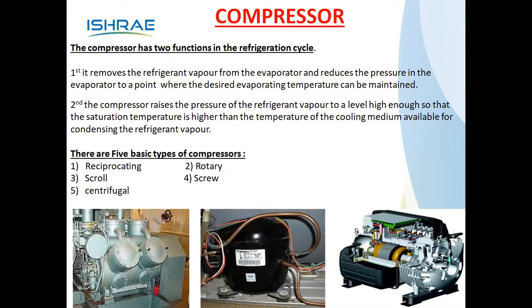There are five types of refrigeration compressors: reciprocating, rotary, scroll, screw, and centrifugal. The first photograph on the left is a reciprocating compressor, the middle one is a rotary compressor, and the third is a centrifugal magnetic-type compressor, which is the latest technology. The reciprocating compressor is like an engine type, where a piston reciprocates between the top and bottom ends.